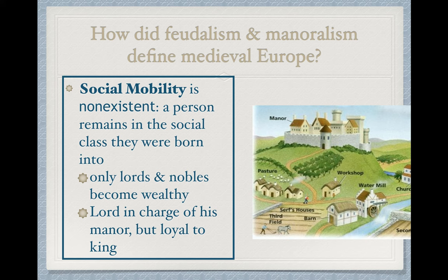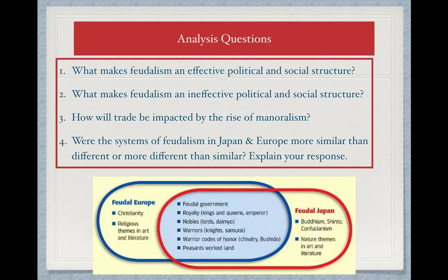In this system, the lords and nobles became wealthy. The lord was in charge of the manor and loyal to the king, but on a day-to-day level this was still a very elite aristocratic class at the top, with the vast majority of society at the bottom. We have four analysis questions, with the last one asking you to compare the feudal systems of Japan and Europe. When comparing, don't just write definitions of each — I need to see a direct relationship drawn between Japanese and European feudalism, showing how they are similar and how they are different.